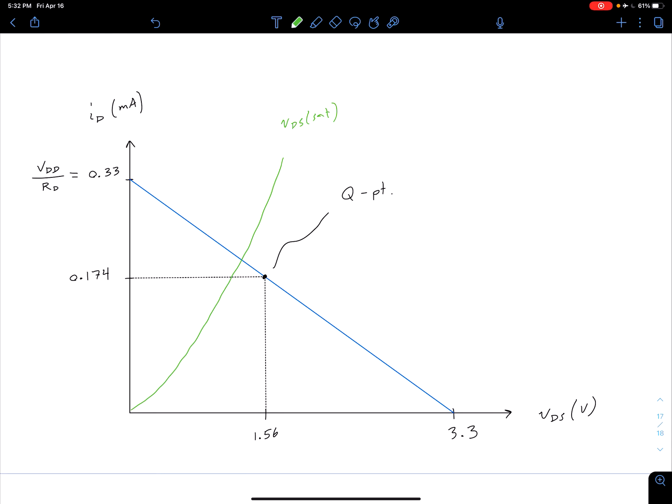And so remember, if we're on the left side of that VDS-SAT curve, we're going to be in our non-saturation region. And if we're on the right side, we're going to be in the saturation region.